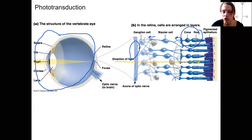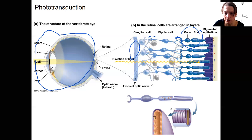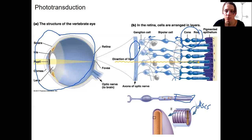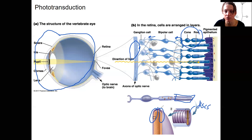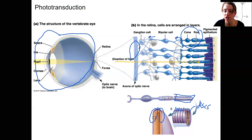We're going to be zooming in to these photoreceptors to see what happens. This outer segment is filled with discs. These discs are surrounded by cell membrane. The main point is that this is all cell membrane. On the cell membrane we're going to have special proteins that capture photons of light. That's why we have so many discs — to capture lots of light and initiate the phototransduction process.